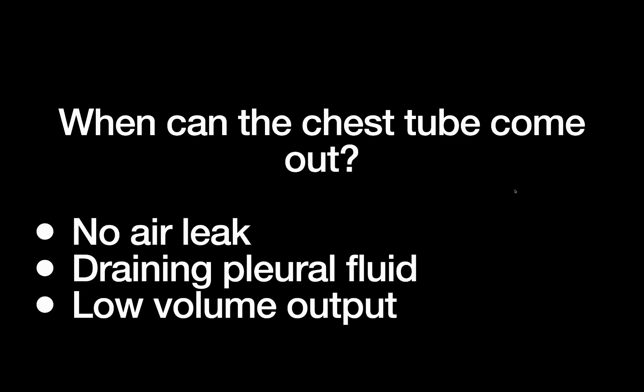When can the chest tube come out? It goes back to air and fluid. You typically want no air leak, or a very minimal air leak in some cases. You want to be draining pleural fluid, not blood or pus. And you want low volume output — generally 200 cc's per day is a widely accepted threshold. And that's the chest tube basics.